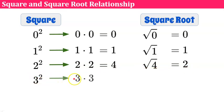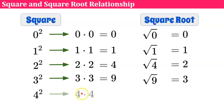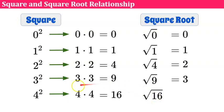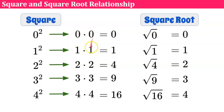Three squared is three times three, which is nine. The square root of nine is three, since three times three equals nine. Four squared is four times four, which equals 16, so the square root of 16 is four. Later in your math career, you'll also learn that the square root can be expressed with an exponent of one half — you're taking half of the factors out from underneath the radical.